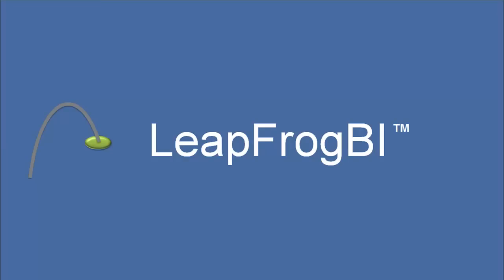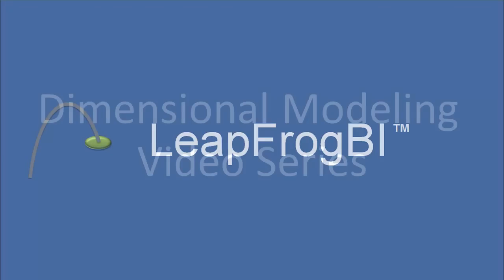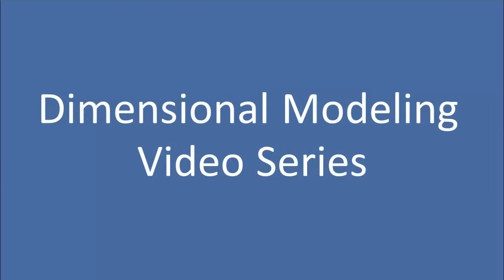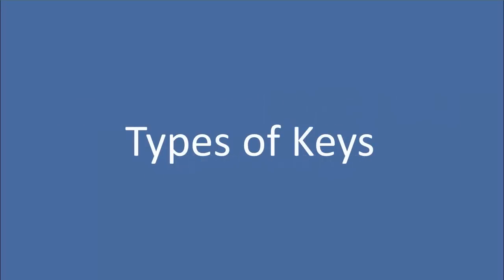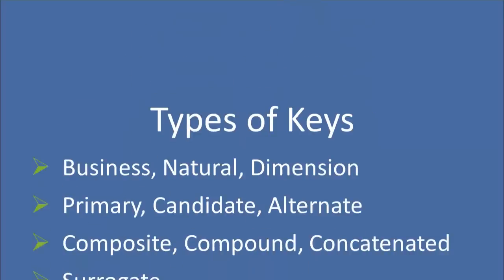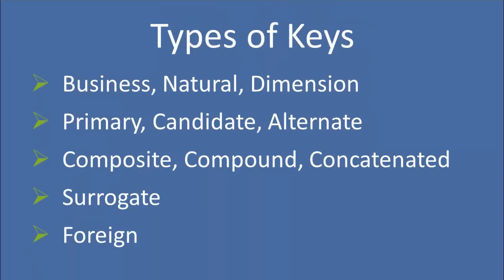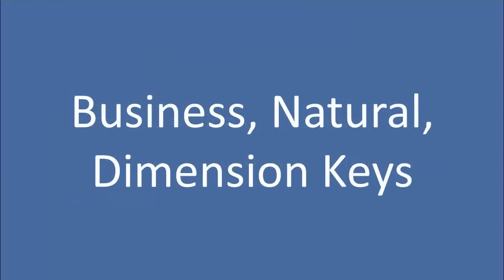Welcome to LeapFrawl BI Academy video training series on dimensional modeling. In this video, we're going to be discussing all types of keys that are related to dimensional modeling. We're going to break it down into five categories: business or natural keys, primary keys, composites, surrogates, and finally foreign keys. So let's start out by discussing business, natural, and dimension keys.